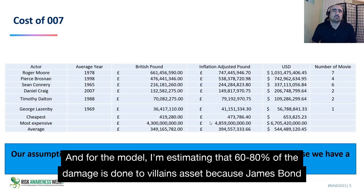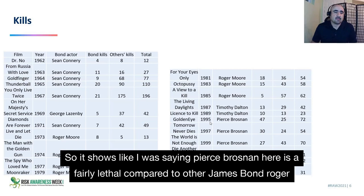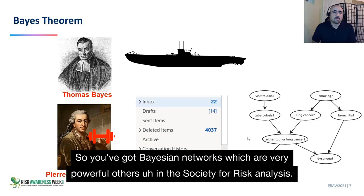It shows that Pierce Brosnan is fairly lethal compared to other James Bond actors, such as Roger Moore, where I see movies with very few kills in some cases. And you've got Bayesian networks, which are fairly powerful — though others in the Society for Risk Analysis were seeing this approach as unscientific.